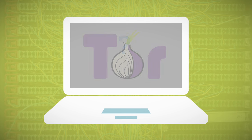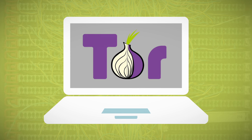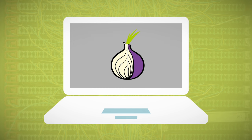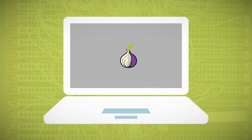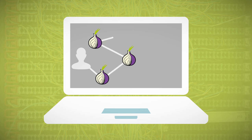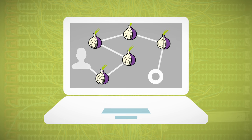One common option is Tor. Tor uses the principle of onion routing for anonymous communication over a computer network. Messages are encrypted in layers and pass through routers until they reach their final destination. The identity of the sender of the message remains hidden.